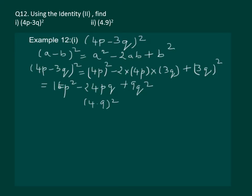Let's move to example 12 part 2. We have to find the square of 4.9. To solve this question, it would be much easier if we use the identity a minus b whole square.